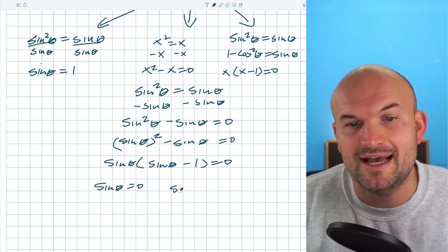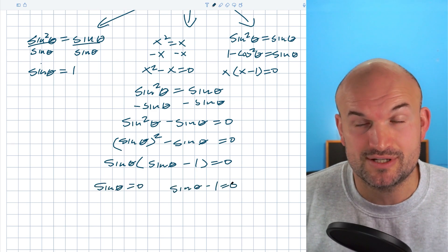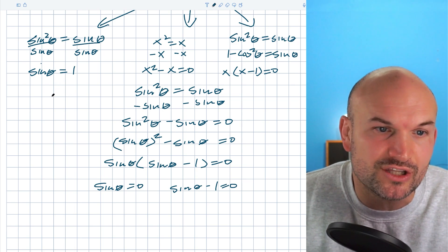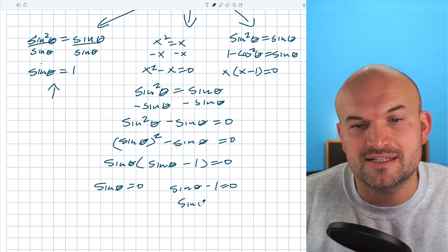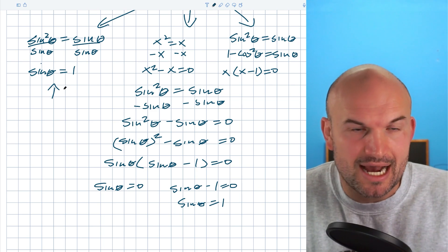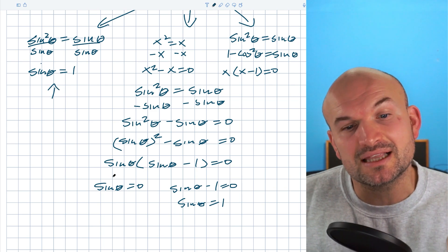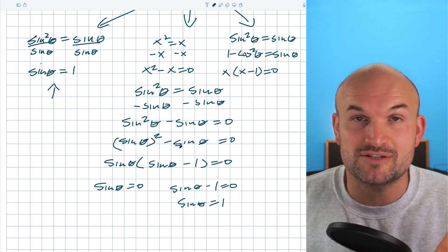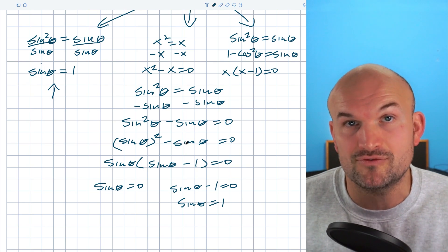So I have sine of theta equal to zero and I have sine of theta minus one equals zero, which gives sine of theta equals one. You can see how this one did give us the solution but it left off the sine of theta equals zero. That's why it's a very important mistake to watch out for.